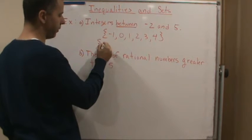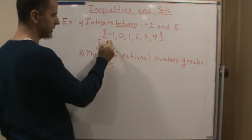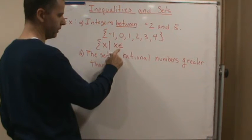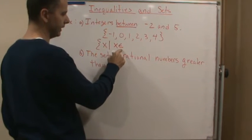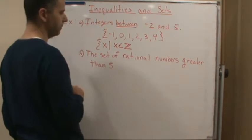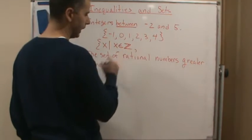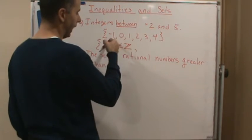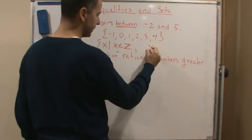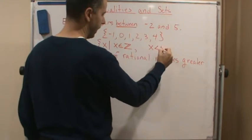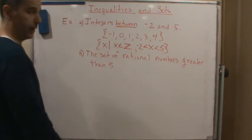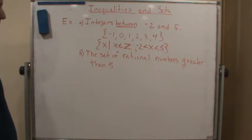Then I would write it like this. I would again have my braces and I would start with the set of all x, so I want the set of all x such that x is an element of the integers, and x is between negative 2 and 5. So we would say x is less than 5 and greater than negative 2, and then we put the end brace on and we're finished.